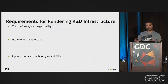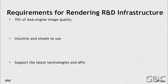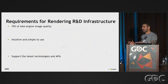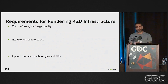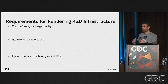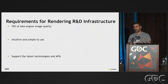So what were the requirements? When we started thinking about Falkor, we wanted to reach 70% of AAA engine image quality — and we feel 70% is a good number. Reaching 100% would be very hard because game engines are complicated. We want to keep the simplicity of the framework; we don't want to build our own engine. We want something simple and intuitive.